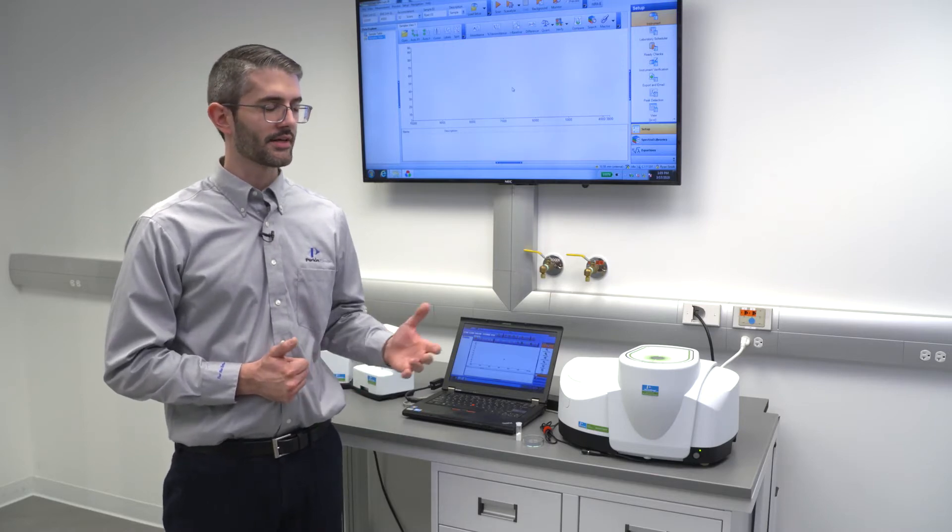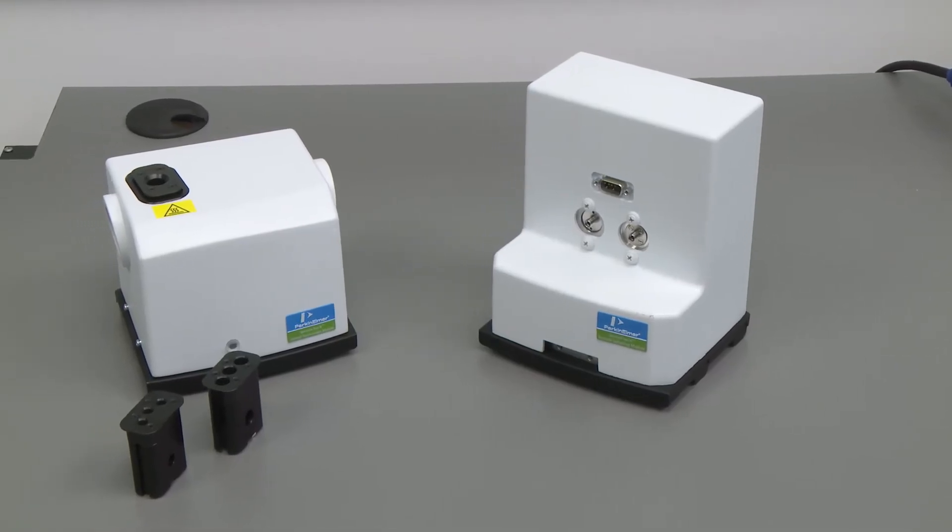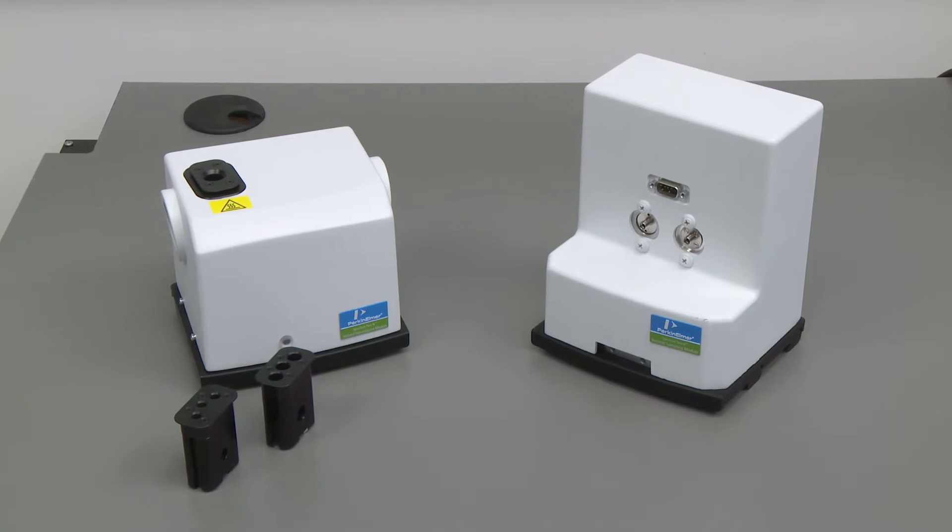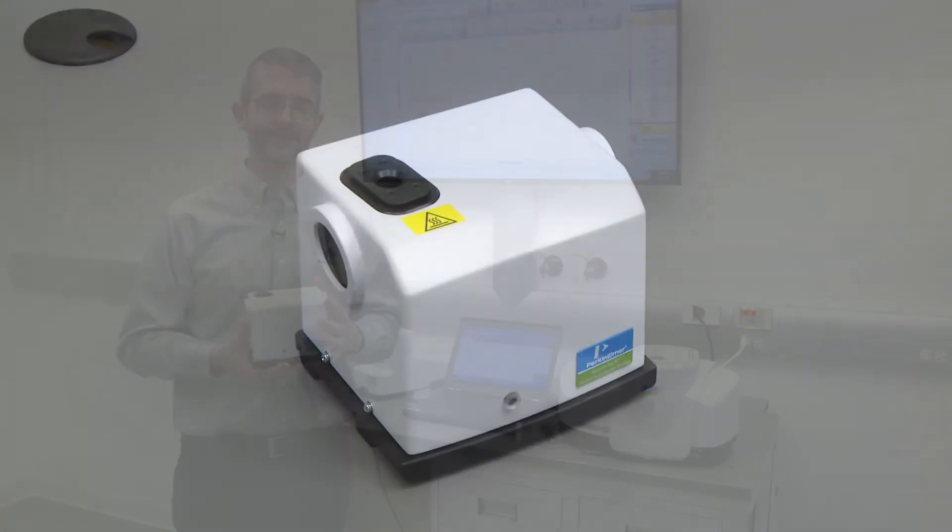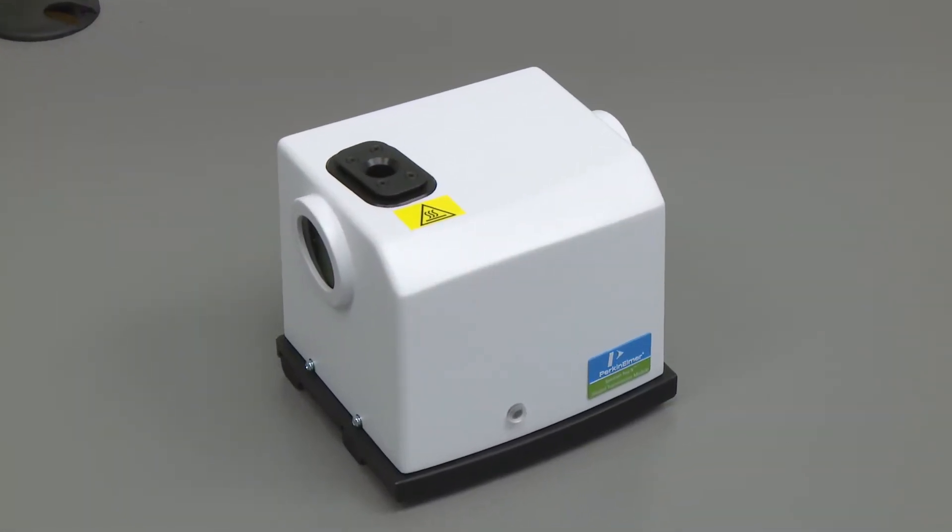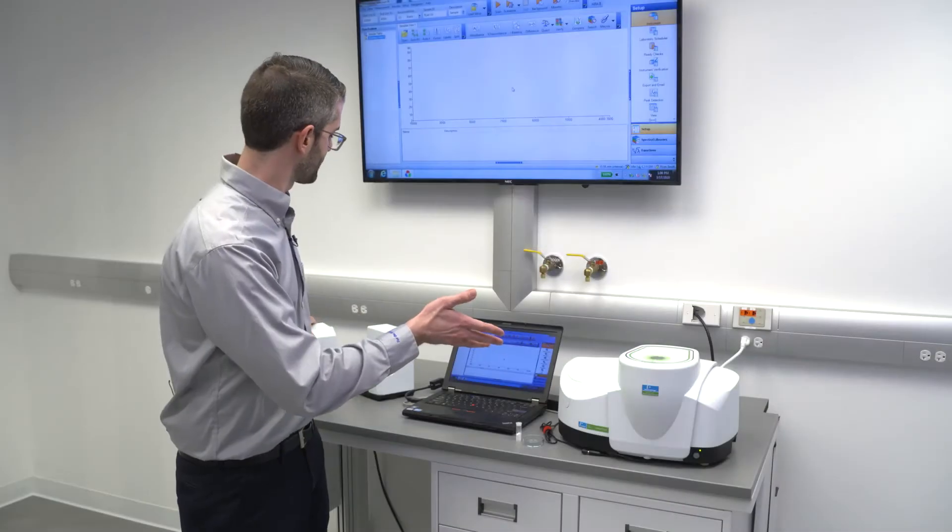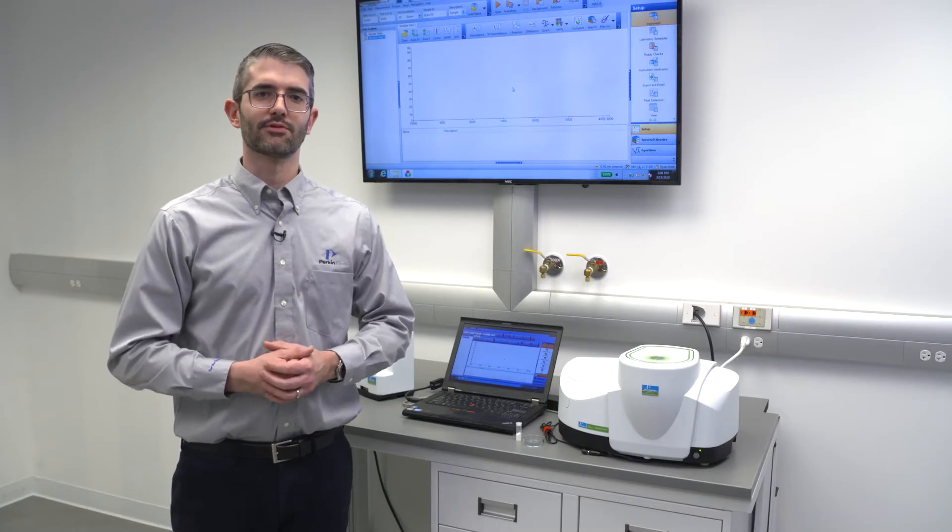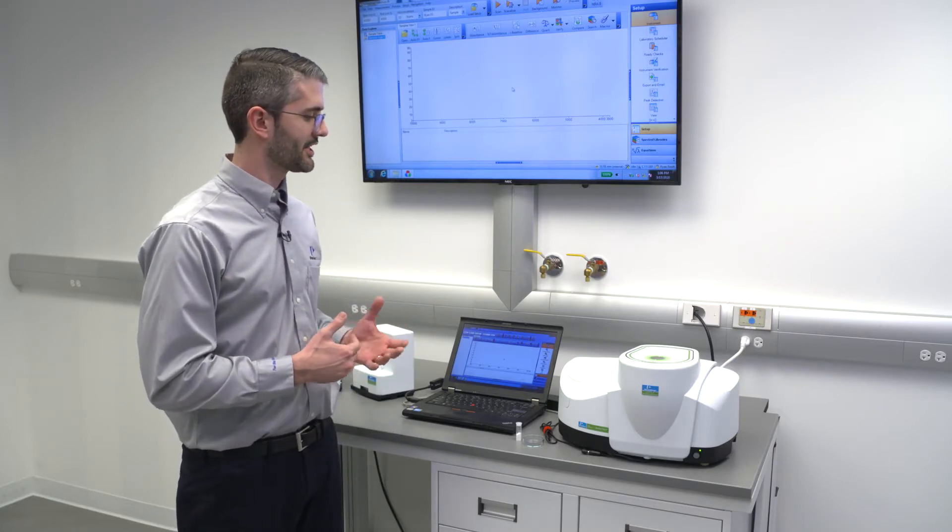The system, like our other FTIRs, can be equipped with a relatively broad range of sampling accessories to meet a variety of measurement challenges. Here we have the heated transmission module, an accessory used for analysis of liquid samples, whereas the system as equipped here on the bench has a NERM accessory, which is a diffuse reflectance accessory. These accessories are interchangeable.